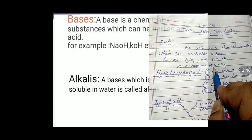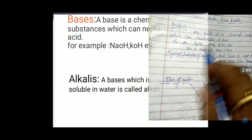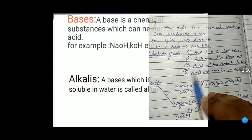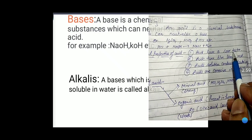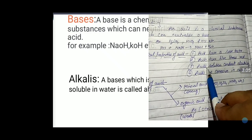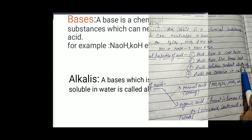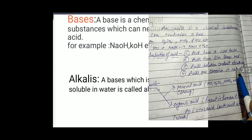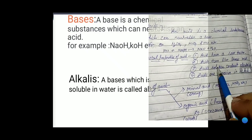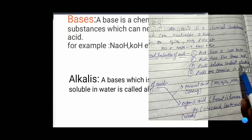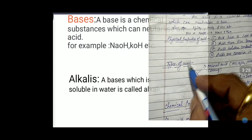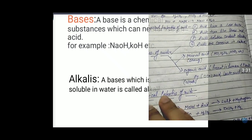Now, physical properties of acids. There are four common physical properties of acids. First, acids have a salty taste. Second, acids turn blue litmus red. Third, acid solutions conduct electricity. Fourth, acids are corrosive in nature. So these four are the physical properties of acids.